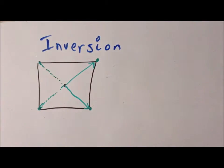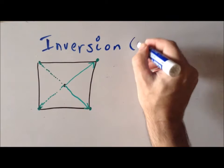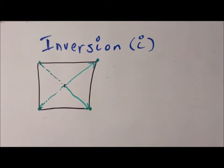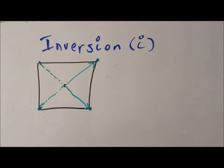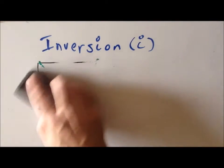This symmetry operation is called inversion. The symbol that we use for inversion is the small letter i — it's one of the more logical symbols that we use. So we have i for inversion. We see that this is going to be true for the square.